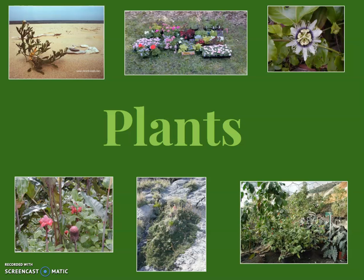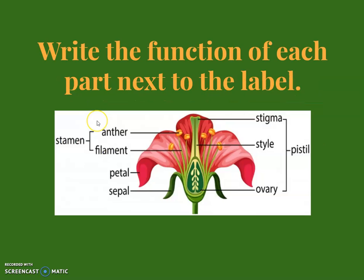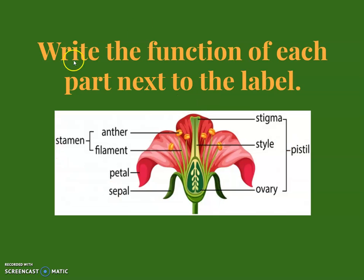Welcome to the lecture on angiosperm reproduction. We're going to look at reproduction in angiosperms and other plants today. First, we're going to label a flower and its reproductive parts. You should see a diagram in your notes packet similar to this, and next to each part you're going to write the function.